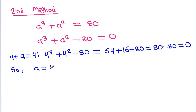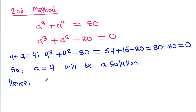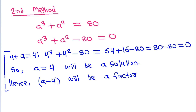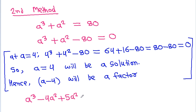Performing polynomial division of a³ minus a² minus 48 by (a minus 4): we get a³ minus 4a², and then 5a², and subtracting 20a plus 20a minus 80, which equals 0.